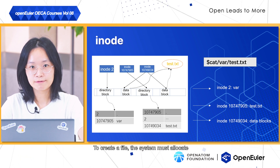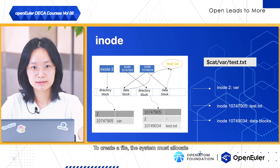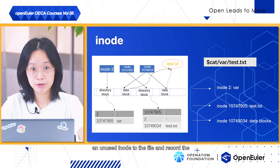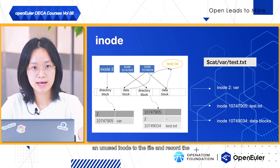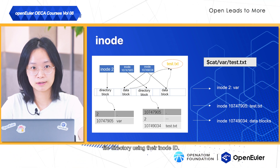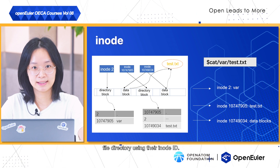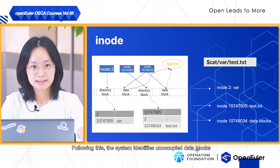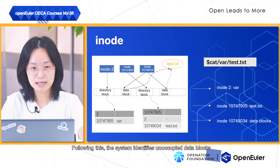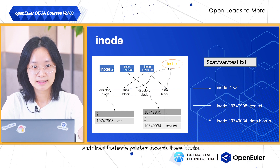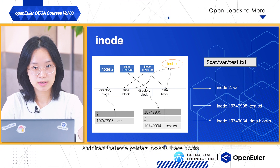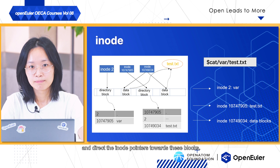To create a file, the system must allocate an unused inode to the file and record the file directory using its inode ID. Following this, the system identifies unoccupied data blocks and directs the inode pointers towards those blocks.